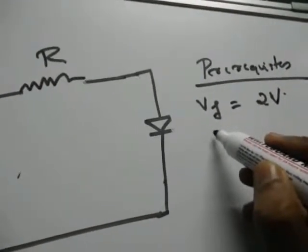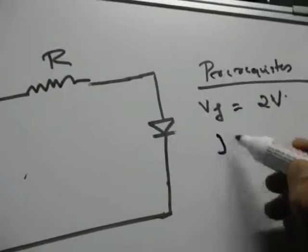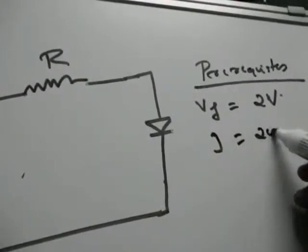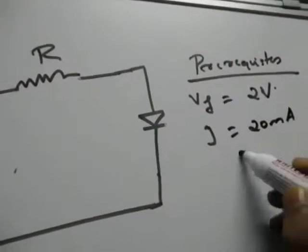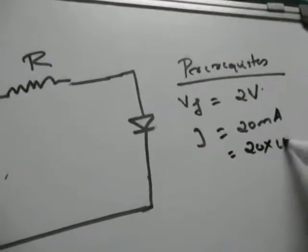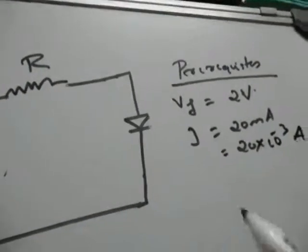And the maximum safe current for LED current is 20mA, 20 into 10 to the minus 3 amps.